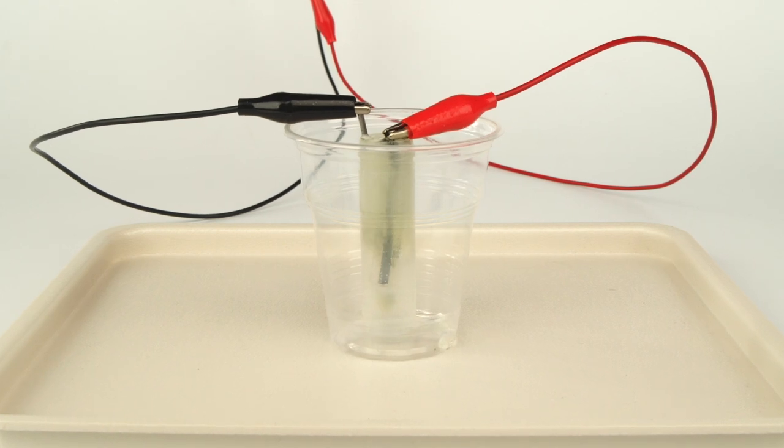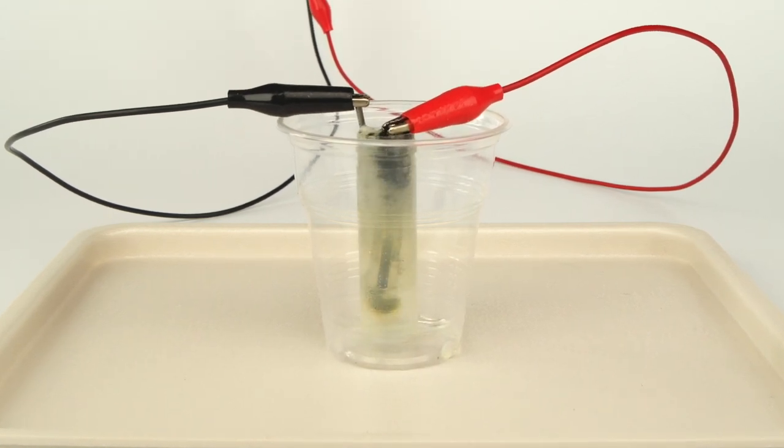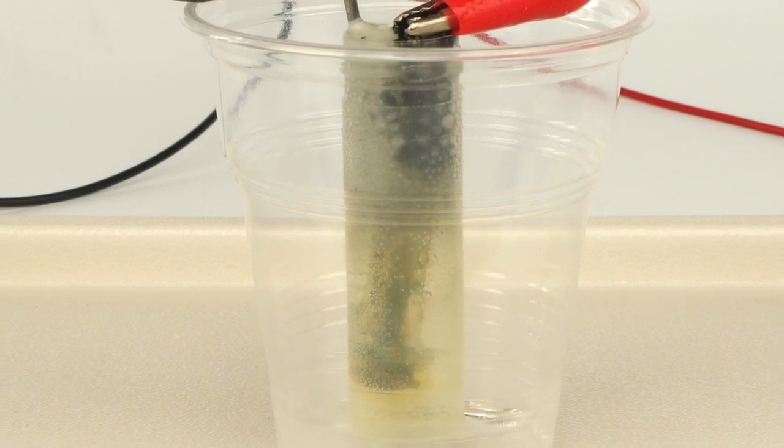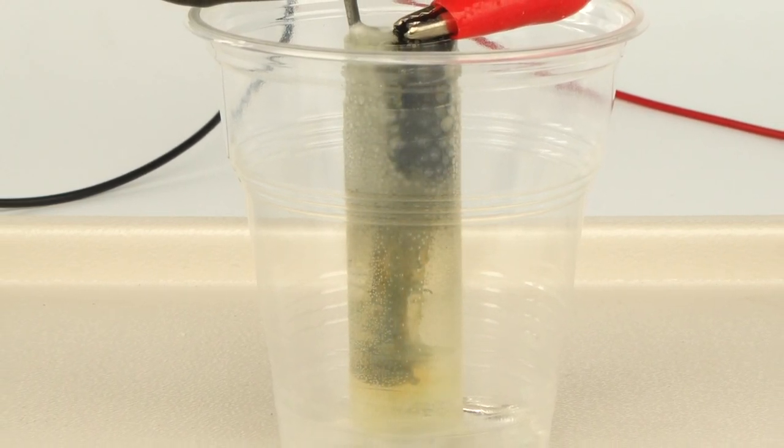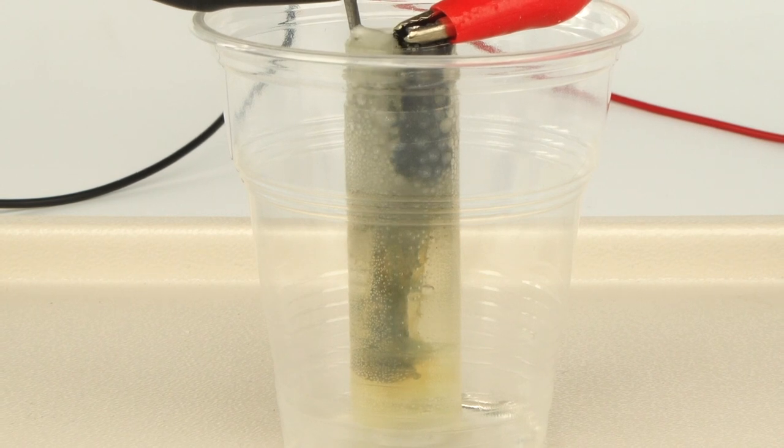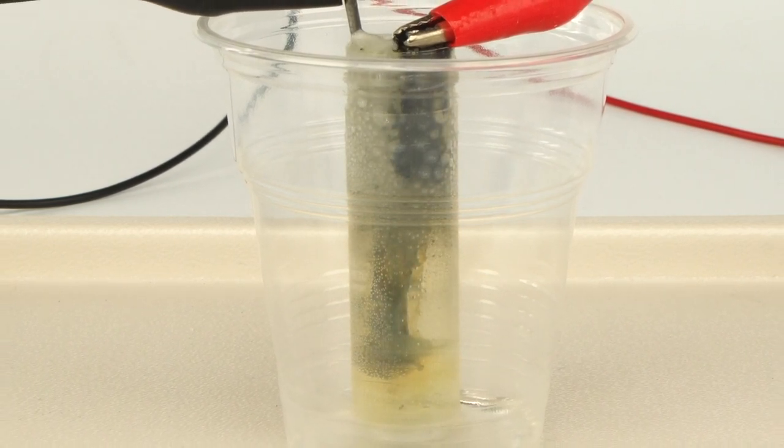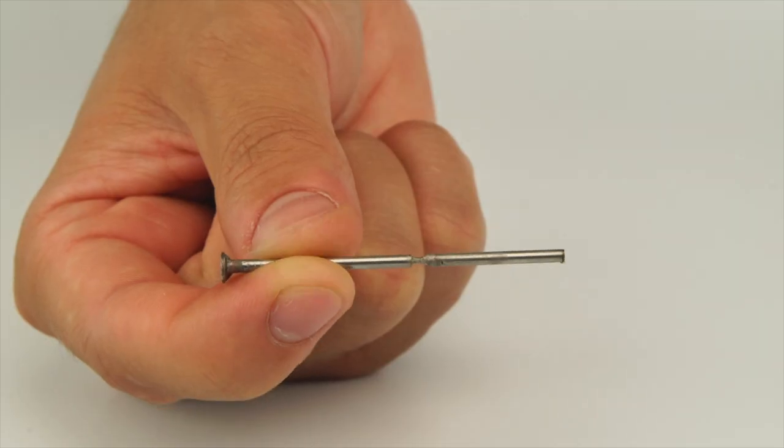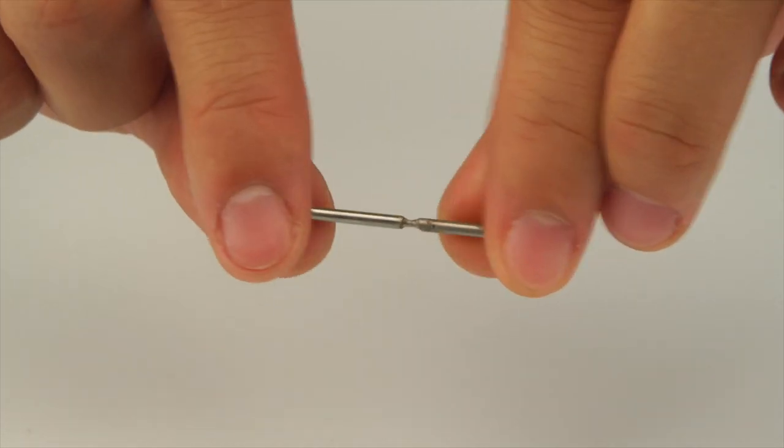Electric current flows through the whole system, through the batteries, the wires, and the nails. The current can even pass through the liquid solution thanks to the salt dissolved in it. The iron atoms in the exposed part of the nail are oxidized and dissolve as iron ions. The nail thins and becomes easier to break.